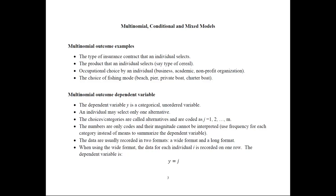Notice one thing about these four examples. First, the dependent variable Y would be a categorical unordered variable. Categorical means it's a category, and unordered means there's no natural ordering of these choices — it's not like one is higher than another, as we will see later with the ordered probit and logit models. Here they're unordered.